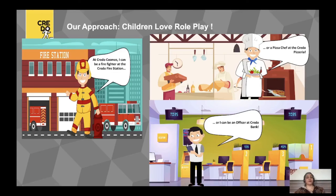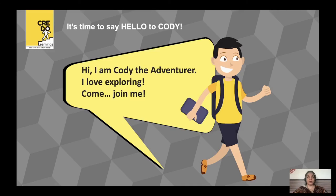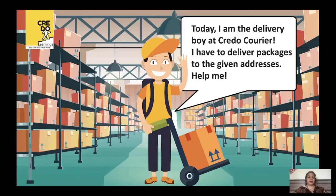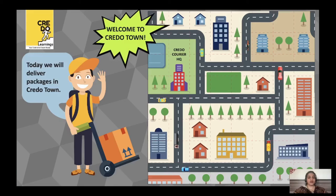These young children love to role-play. They love taking up various personas like firefighter, bank officer, astronaut, a chef and other such roles. So we have blended all these and created activities wherein these characters take up different roles and do the everyday services that they see around them. All this happens in a fantasy world known as Credo Cosmos. Today, this character Cody will talk about the everyday service of courier delivery. Since the pandemic, children are seeing their parents doing online shopping and a lot of couriers being delivered to home, so they are very inquisitive about this service. This courier delivery activity happens in a fictitious town known as Credo Town — a set of houses, offices, and a courier headquarter, made up of a grid for easy learning.